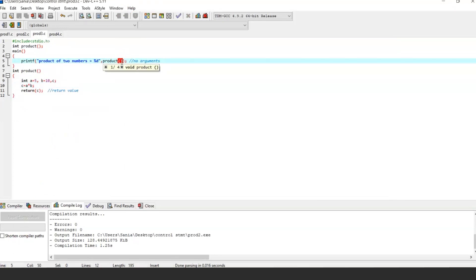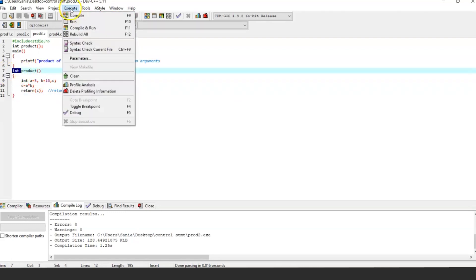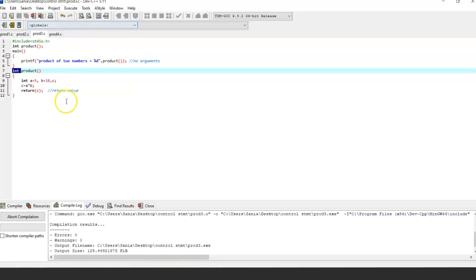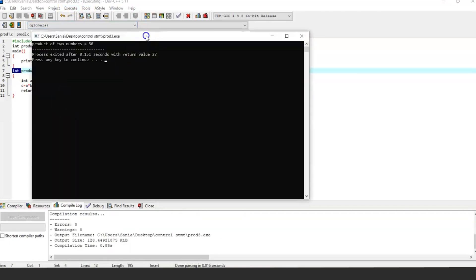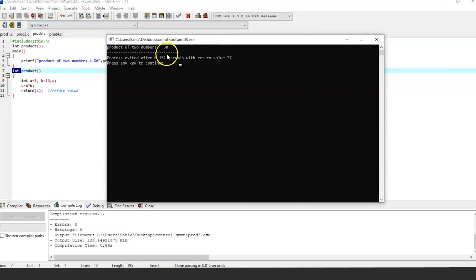Next program is using a function with no argument and with return value. To get a return value, we have a data type int. Let's run it. As you all can see, we got an output: product of two numbers is equal to 50.